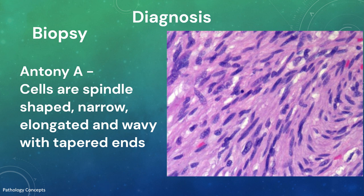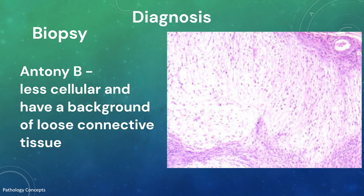The cells are interspersed with collagen fibers, and mitotic figures are rare. Antoni B areas are much less cellular and have a background of loose connective tissue that is myxomatous in appearance. The vessels within the tumor show perivascular hyalinization. The tumor may be infiltrated by many foamy histiocytes.